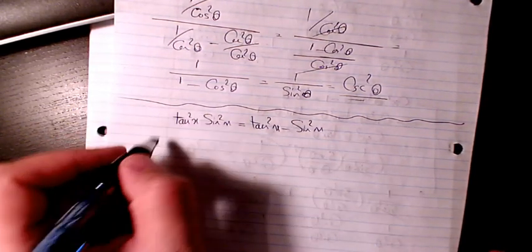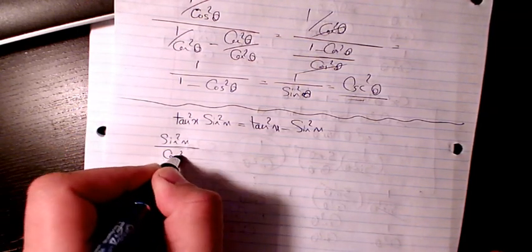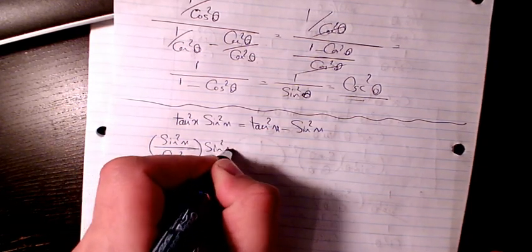Tan squared is sin squared x divided by cosine squared x, and I have sin squared x here.